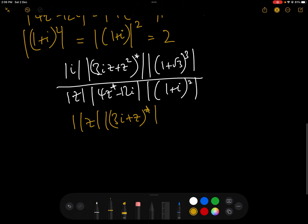over times 8, all over mod z times 4 times mod z conjugate minus 3i.